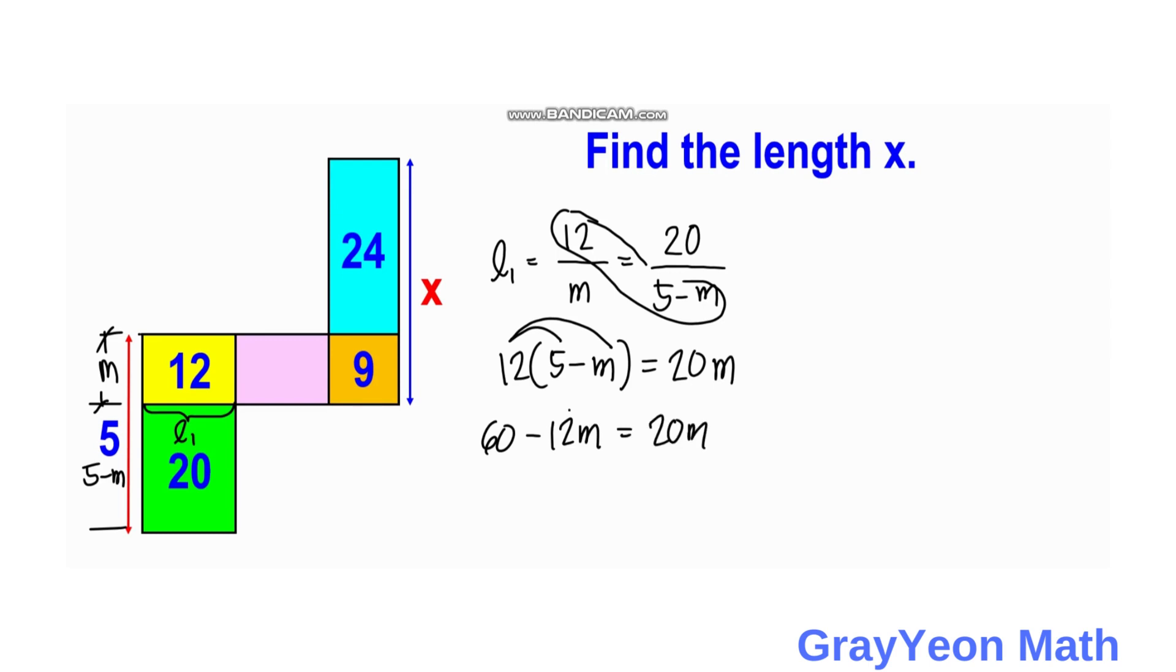So if we put this to the right hand side, we have 32M is equal to 60. And if we divide both sides by 32, cancel this, so divide this by 4, then we have 8, so we have 15 on the numerator. So M is equal to 15 over 8.